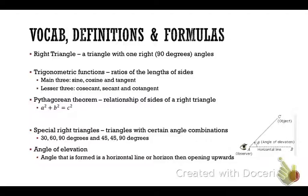The first term is right triangle. A right triangle is a triangle that has one right angle, and a right angle is a 90-degree angle. We're going to be working with right triangles in this section. When you draw a sketch of a right triangle, to indicate the 90-degree angle, you simply put a box at that corner.